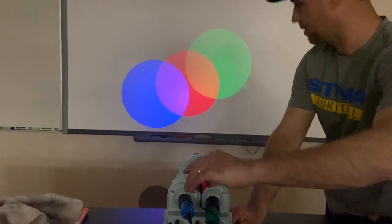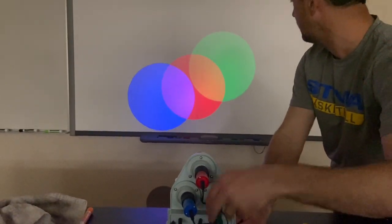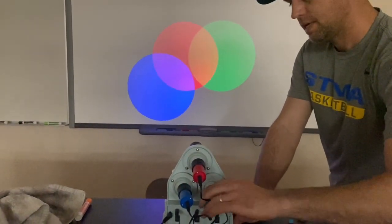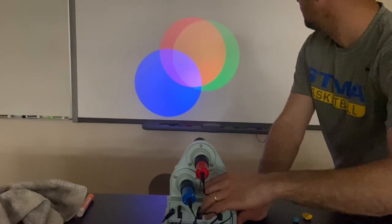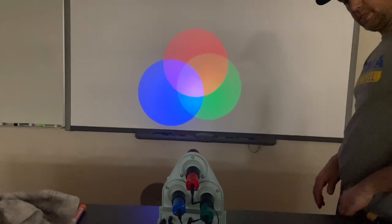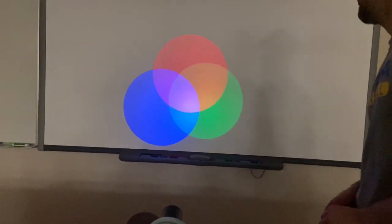So what happens when you mix all colors of light? Well, we already talked about how if you mix red, green, and blue, it makes white light. Now, that's not a perfect white, but it's kind of close to white light.